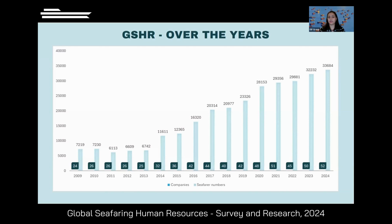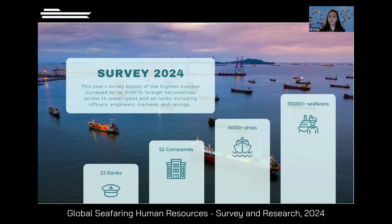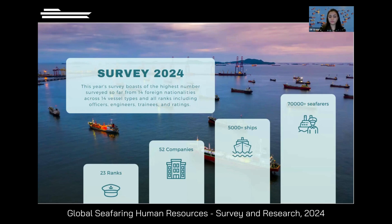This graph shows how GSHR has grown over the years. The small boxes along the x-axis represent the number of participating companies, and the tall bar represents Indian on-board seafaring positions. We started in 2009 with 24 participating companies, and this year we have 52 participating companies — the highest ever. This year is our biggest survey to date. We surveyed 14 vessel types, 23 ranks from 52 companies. Across these companies, there are close to 5,000-plus ships, and total seafarer data collected from all nationalities and ranks is over 70,000.